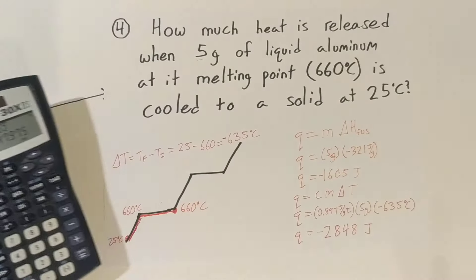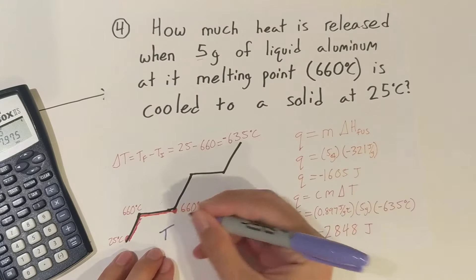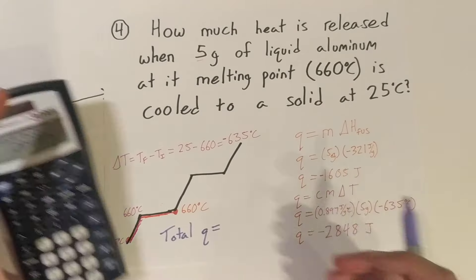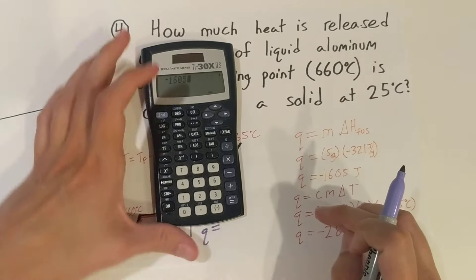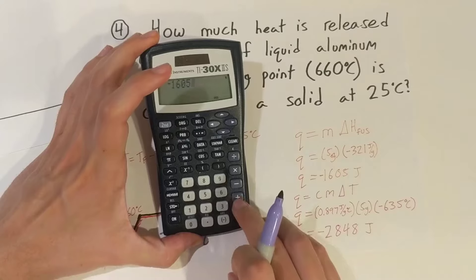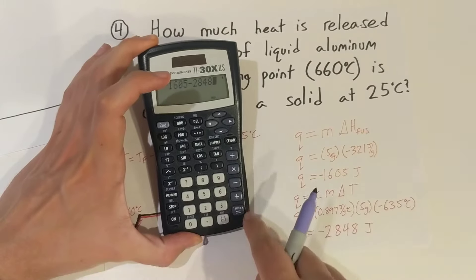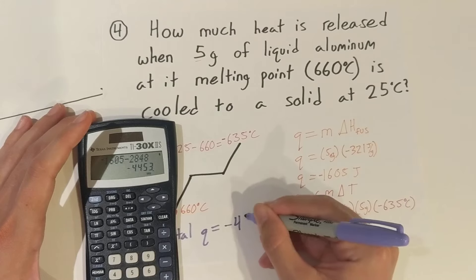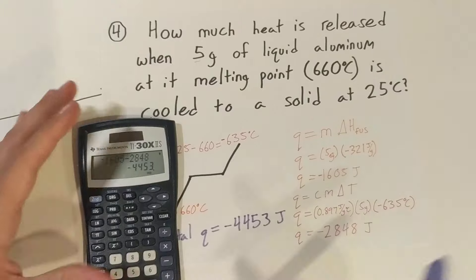Plugging all those in: 0.897 times 5 times negative 635 gives us negative 2,848 joules. So our total Q equals negative 1,605 plus negative 2,848, which is negative 4,453 joules.